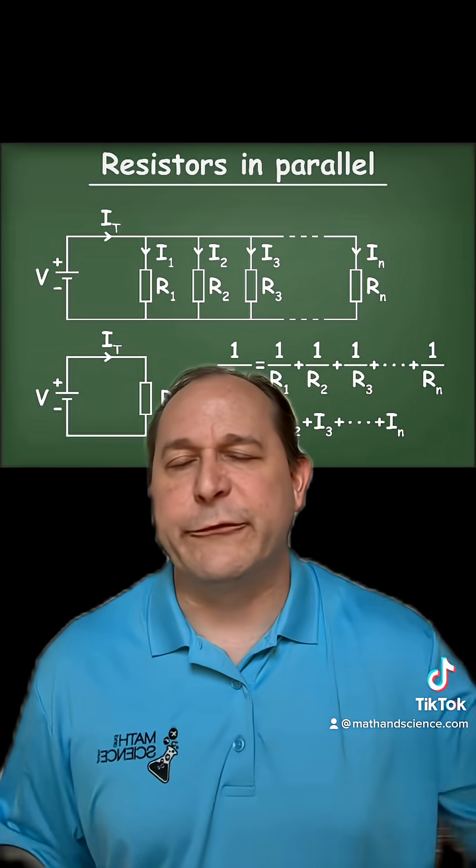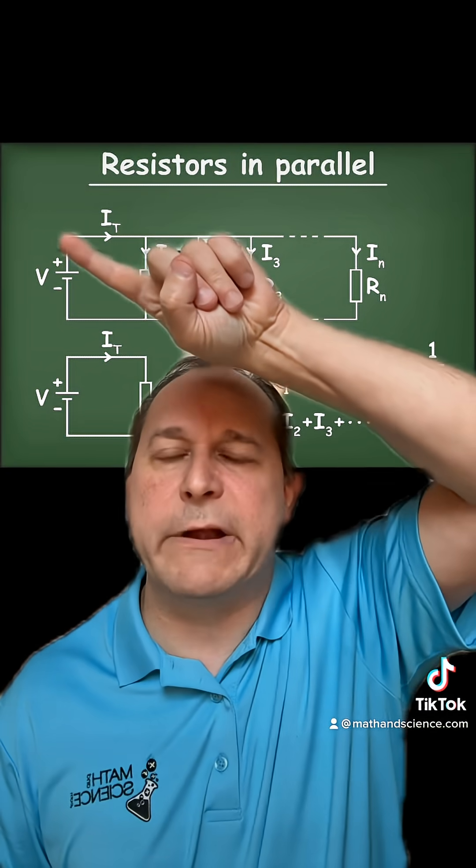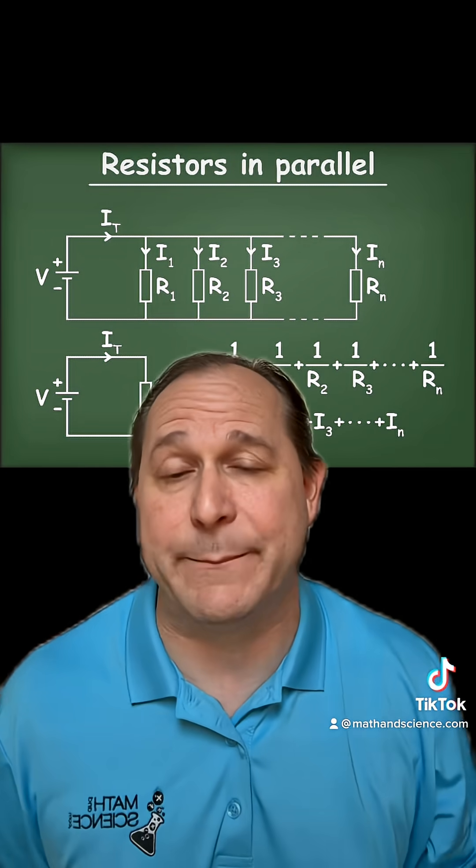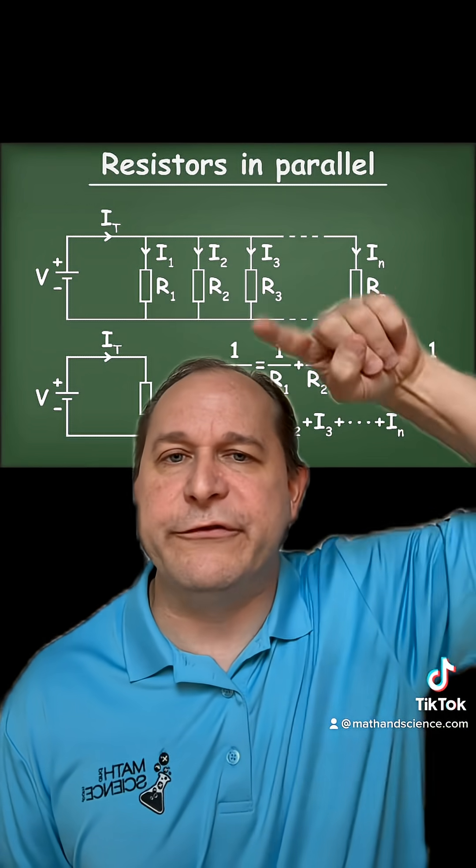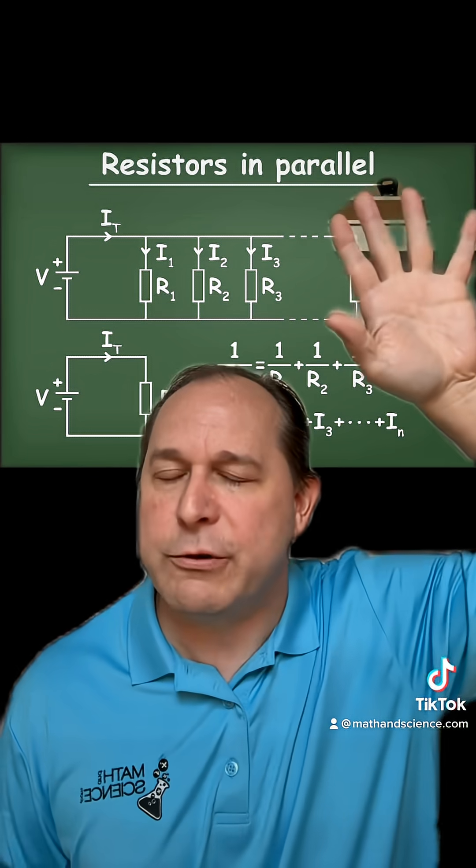So let's say that this was your circuit and you knew that the current coming out of the battery was six amps. And you had three branches: one, two, three. Forget about this one over here, and that's all you had.